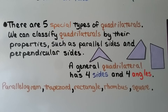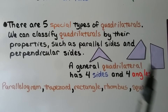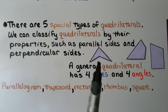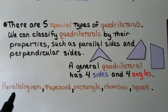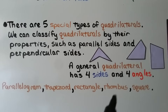There are five special types of quadrilaterals. We can classify quadrilaterals by their properties, such as parallel sides and perpendicular sides. A general quadrilateral has four sides and four angles, but we also have parallelograms, trapezoids, rectangles, rhombuses, and squares.